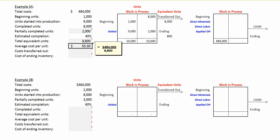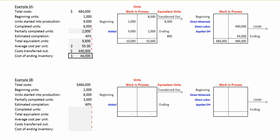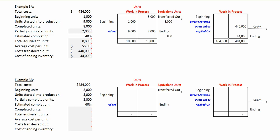In terms of costs transferred out, 8,000 units times $55 per unit means $440,000 will flow out of work in process into finished goods inventory or the next production account. The cost of ending work in process inventory is 800 equivalent units at $55 per unit, or $44,000. The total cost we have to account for, $484,000, equals the cost that we began with.